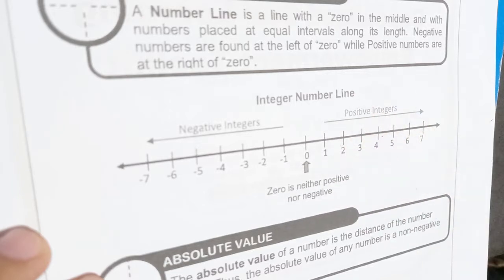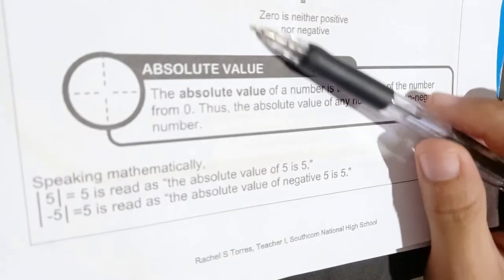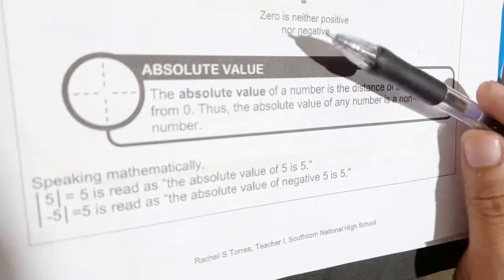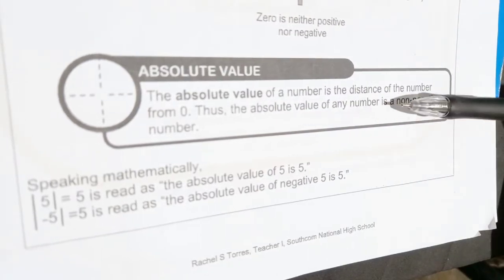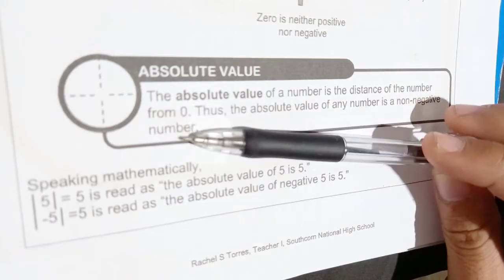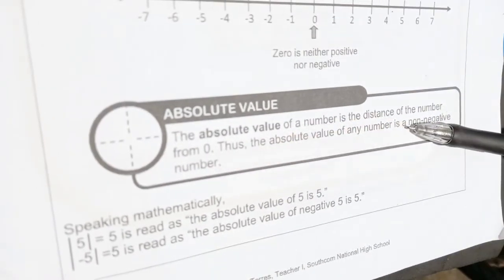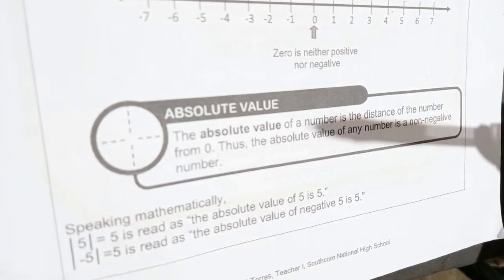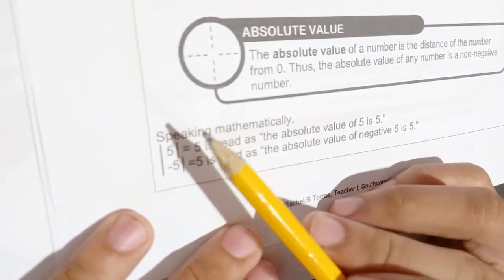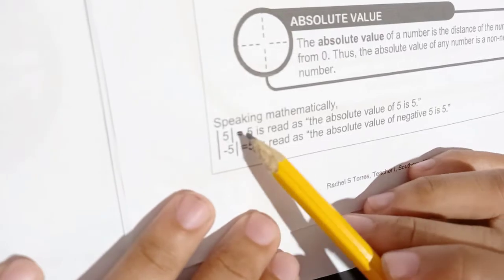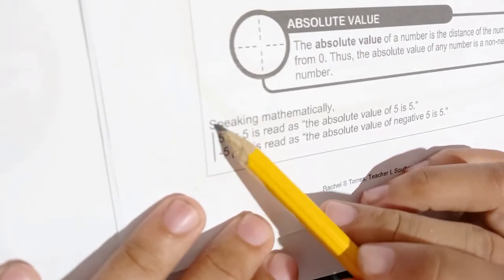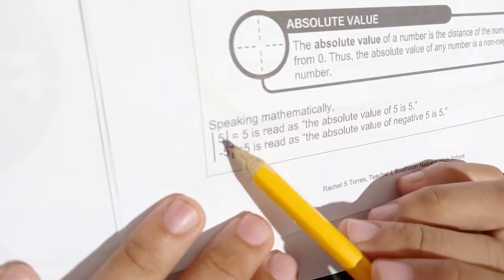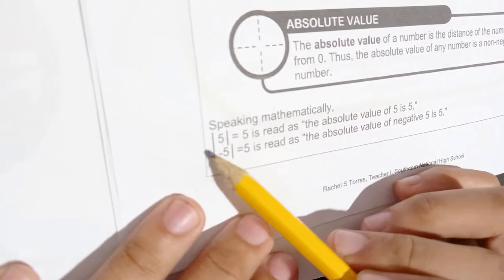We will use the number line to determine the absolute value of a number. By definition, the absolute value of a number is the distance of that number from zero. Therefore, the absolute value is always non-negative — it is a positive number. In mathematics, to denote absolute value, a number is placed between two bars. For example, this is read as 'the absolute value of five.'